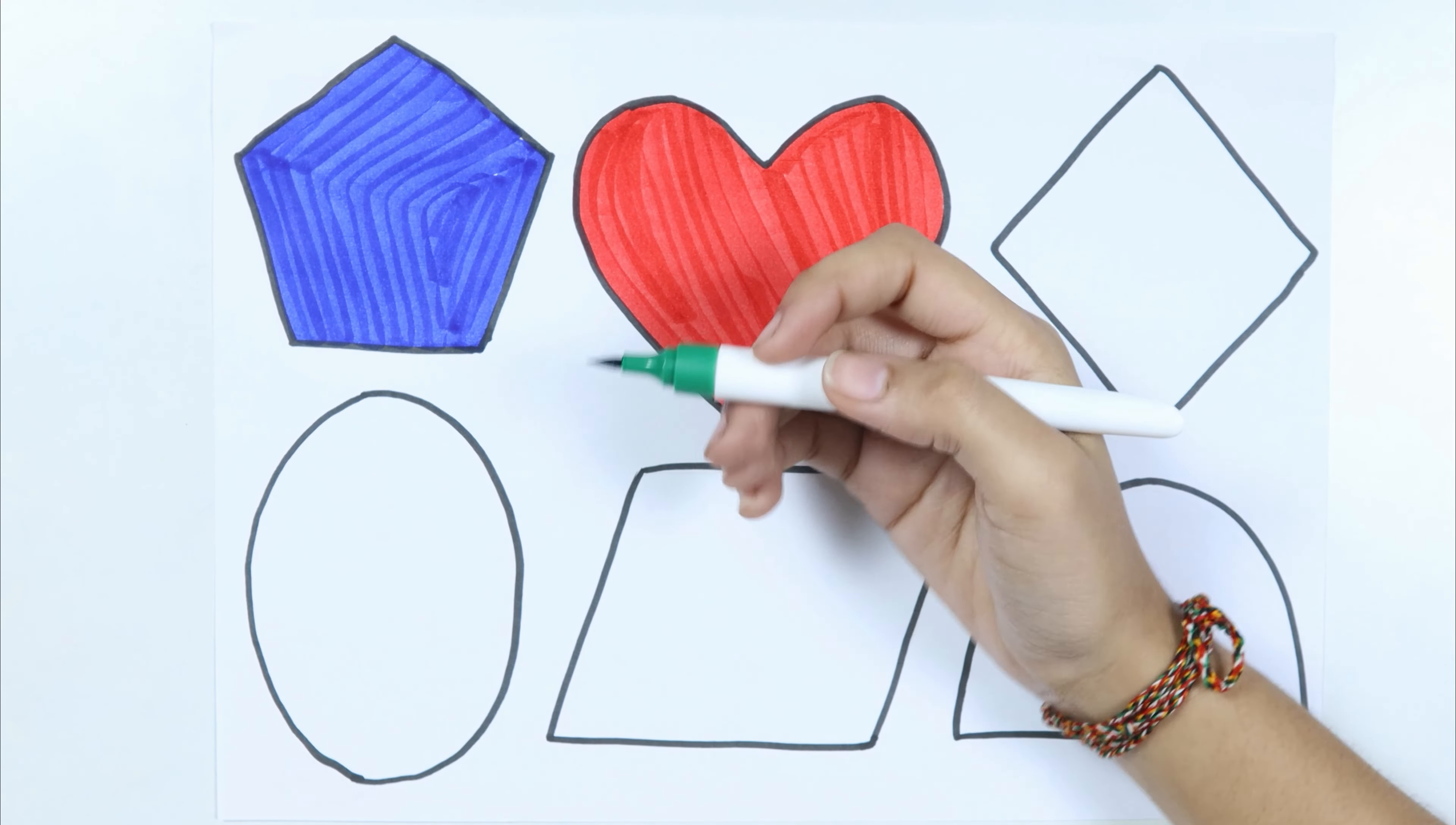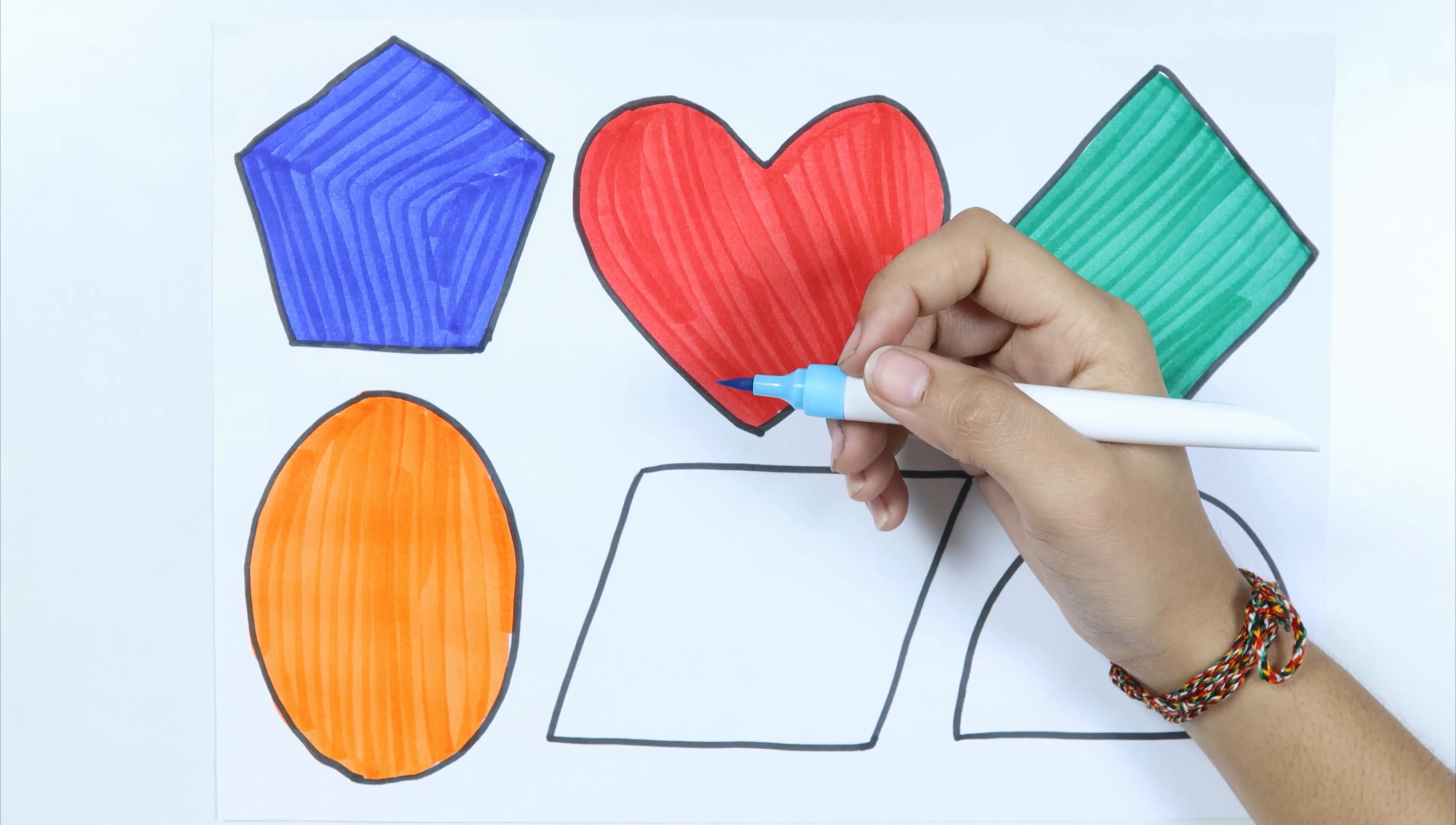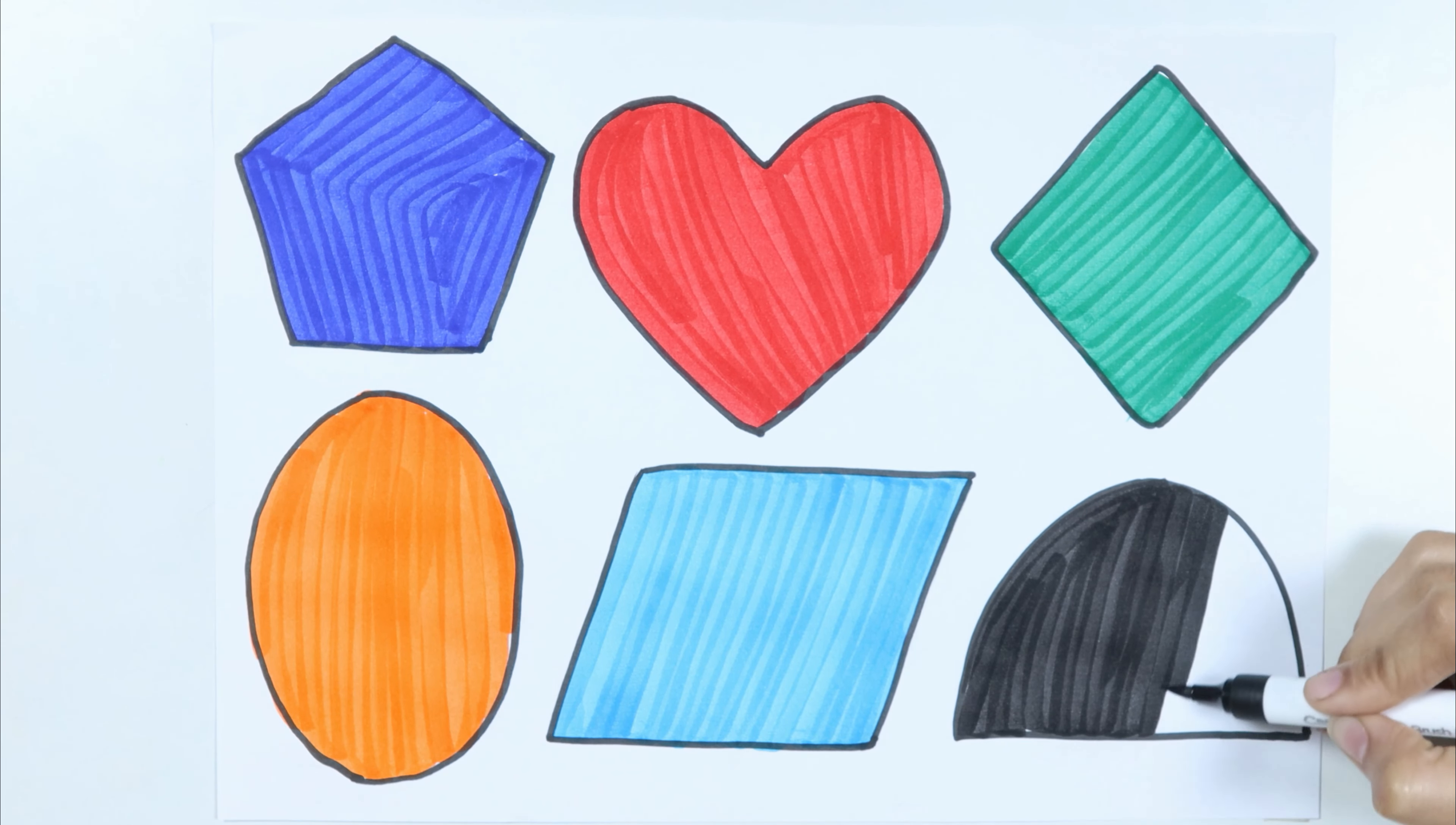Heart, dark green color. Rhombus, orange color. Ellipse, sky blue color. Parallelogram, black color. Semi-circle.